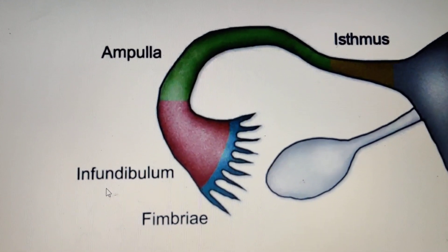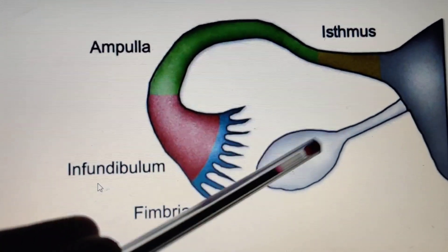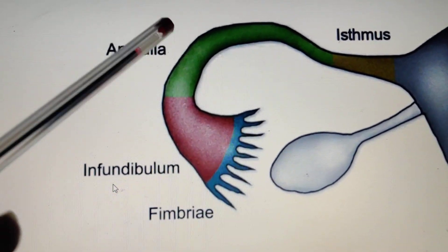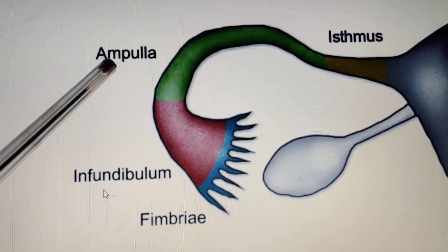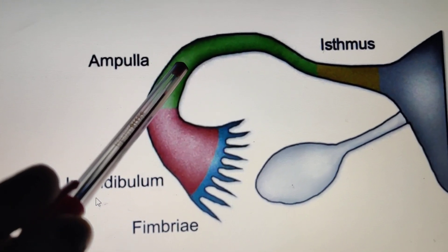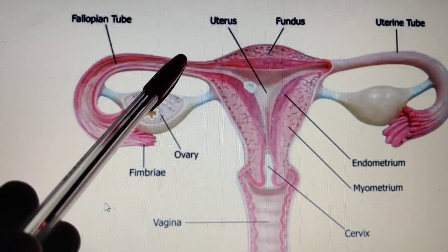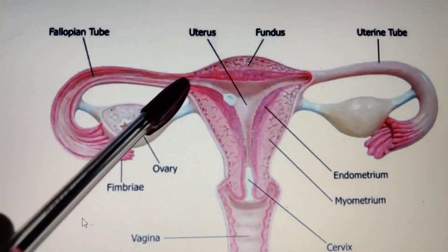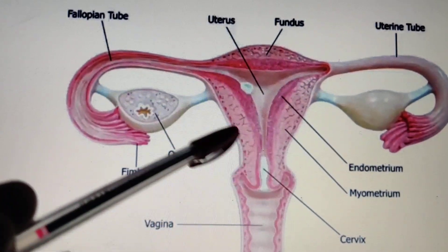Fimbriae collect the secondary oocyte produced inside the ovaries. The ampulla is actually the site of fertilization — here the fertilization takes place. This fallopian tube opens into the uterus, and this whole part is the uterus.